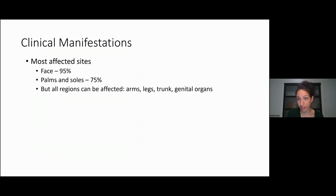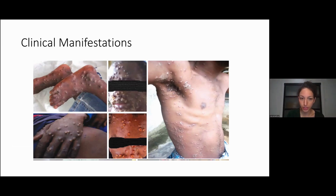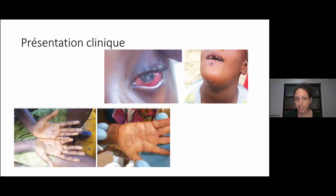They say the face is the most affected area — 95% — and palms and soles 75%, a little different from what we've seen here. All regions of the skin can eventually be affected: arms, legs, torso, genital organs. The pictures they usually show have a lot of lesions, but patients I've seen generally do not have a lot. Even when lesions are somewhat everywhere, this is not really representative of what we're currently seeing. You do see different phases — pustules, umbilicated pustules, ulcers — so it can look different depending on where the patient is in their evolution. Classic palms, soles, and face involvement, and it can give keratitis and conjunctivitis.